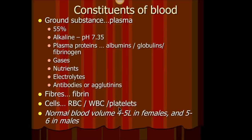Men normally have a greater blood volume than females — because of a larger surface area, plus they have testosterone, and testosterone helps to produce more blood cells. Normal blood volume in females is about close to five liters. In males, it's a little bit more, about six liters.